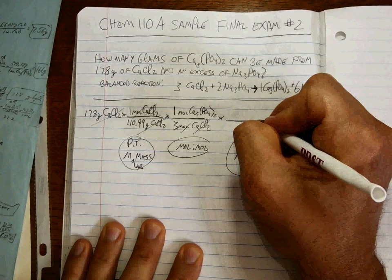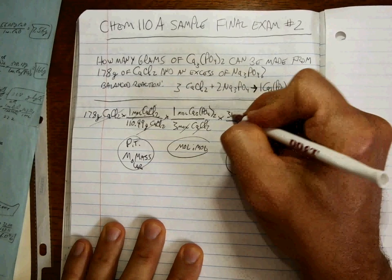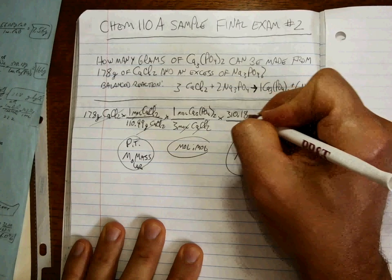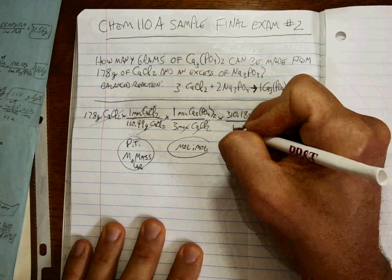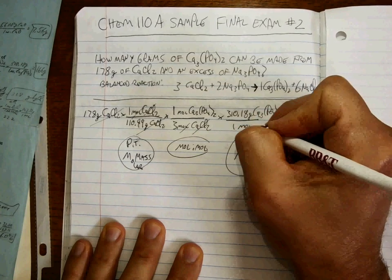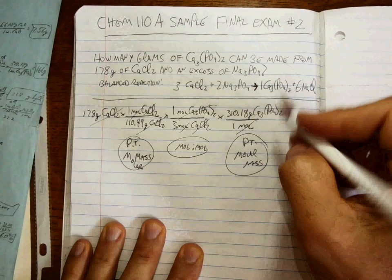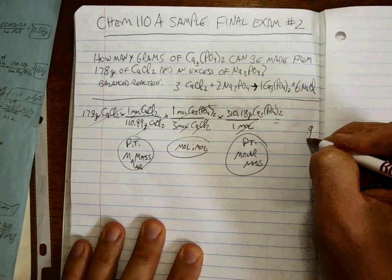And I calculated this already. 310.18 grams of calcium phosphate for every one mole. Now moles cancel. We're left with grams.